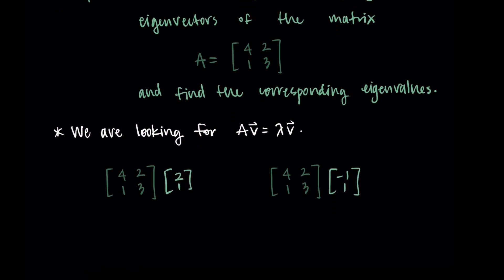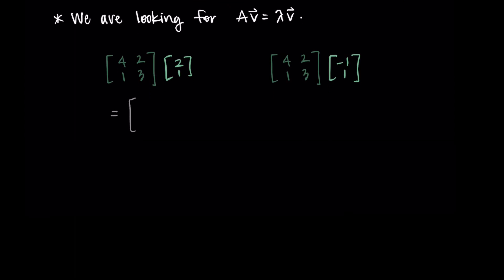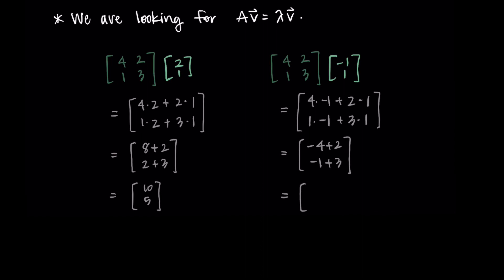When I do this multiplication, I'm doing 4 times 2 plus 2 times 1, that's the first row, and then 1 times 2 plus 3 times 1, that's the second row. Then I'll simplify. I'm getting 8 plus 2 and 2 plus 3, which is [10, 5]. That's my resulting vector from the first A times v. Let's do the second eigenvector now. I'm getting 4 times -1 plus 2 times 1, that's the first row, and then 1 times -1 plus 3 times 1, that's the second row. Now I simplify. I'm getting -4 plus 2 and -1 plus 3, which is [-2, 2].